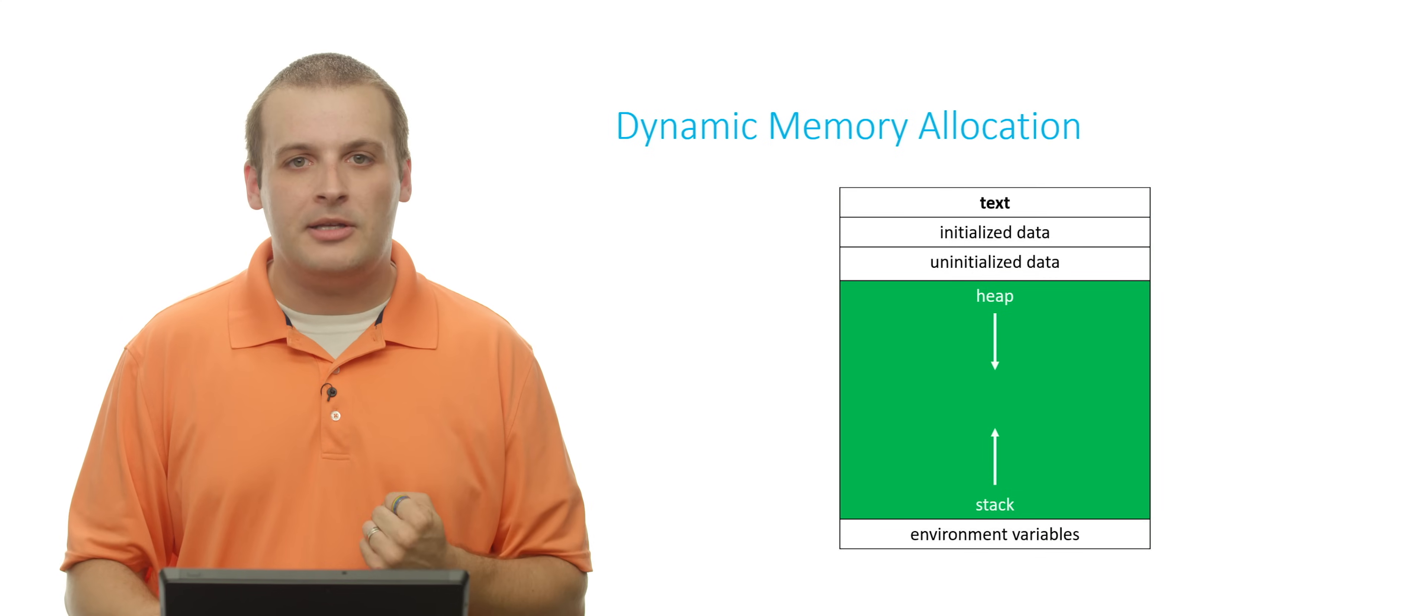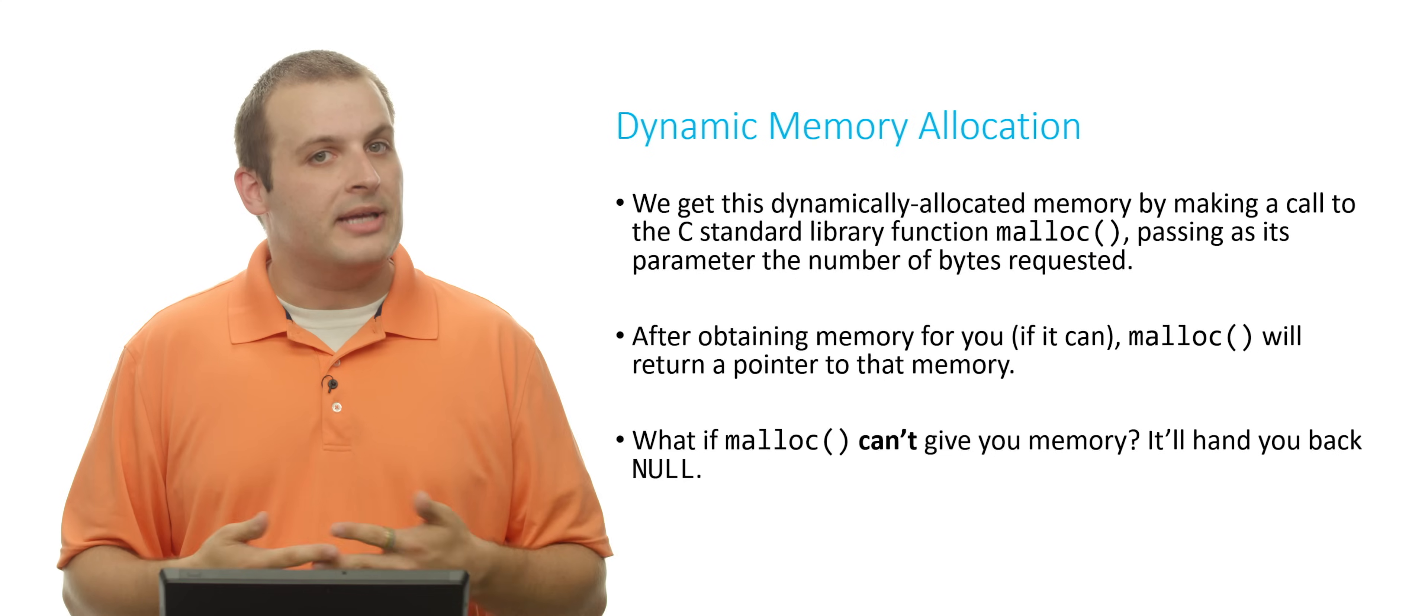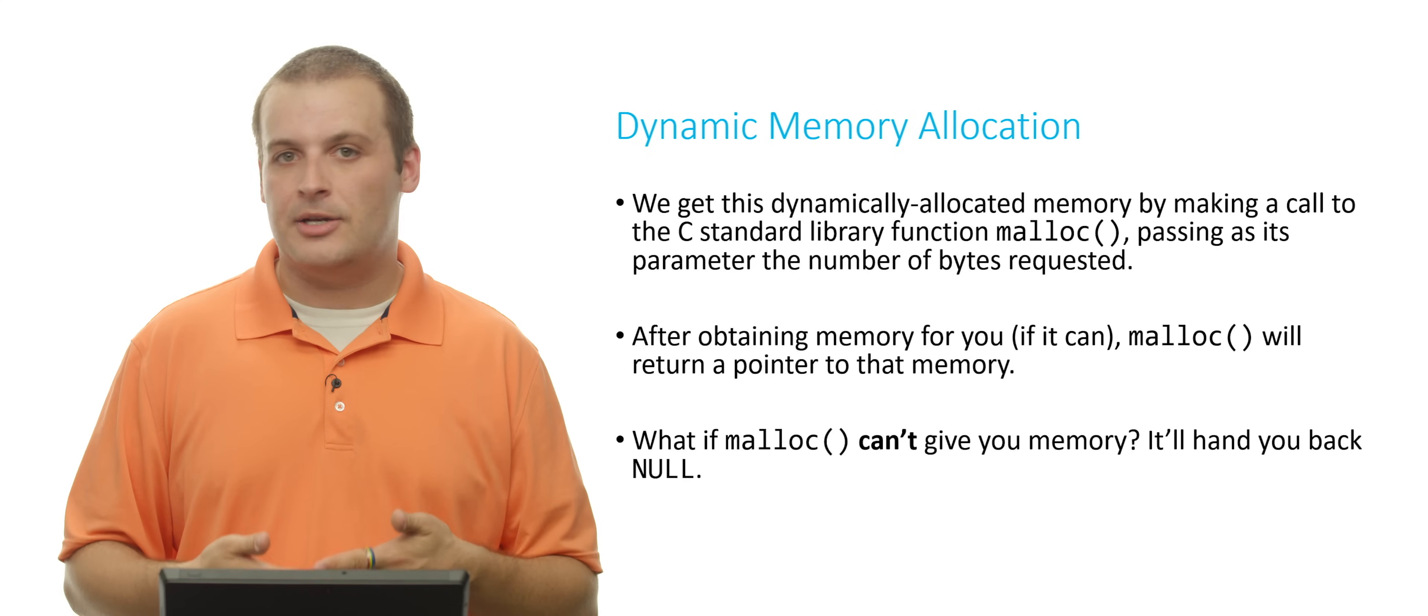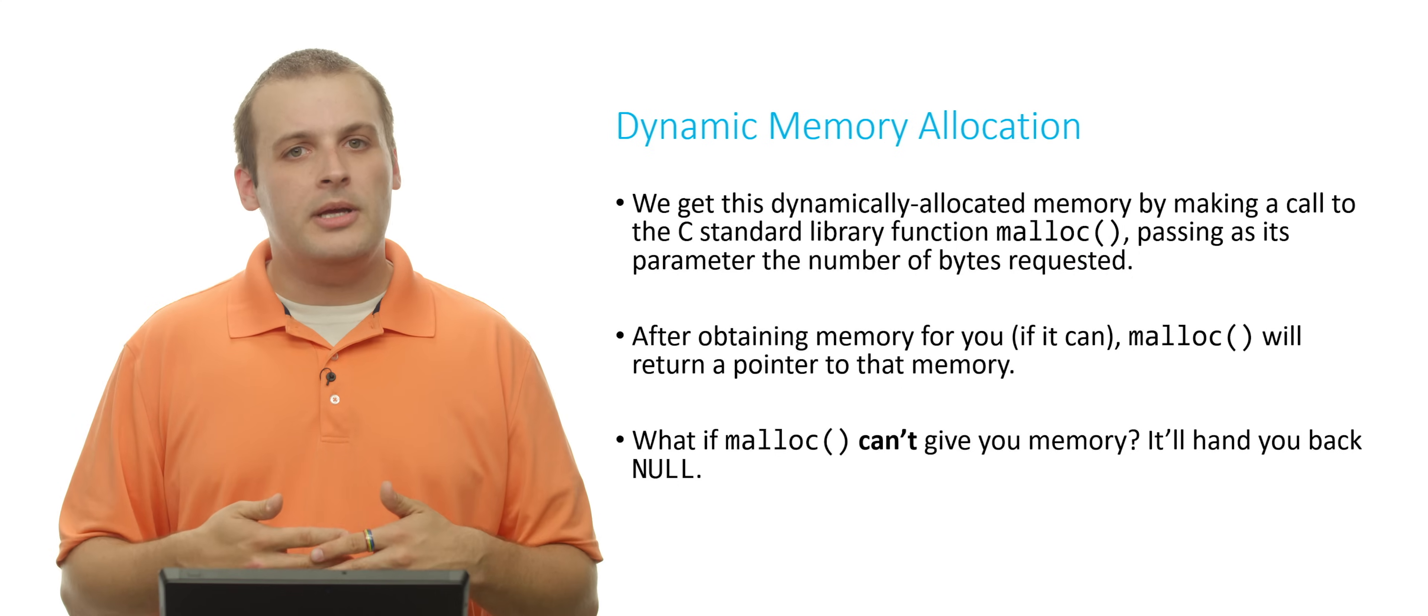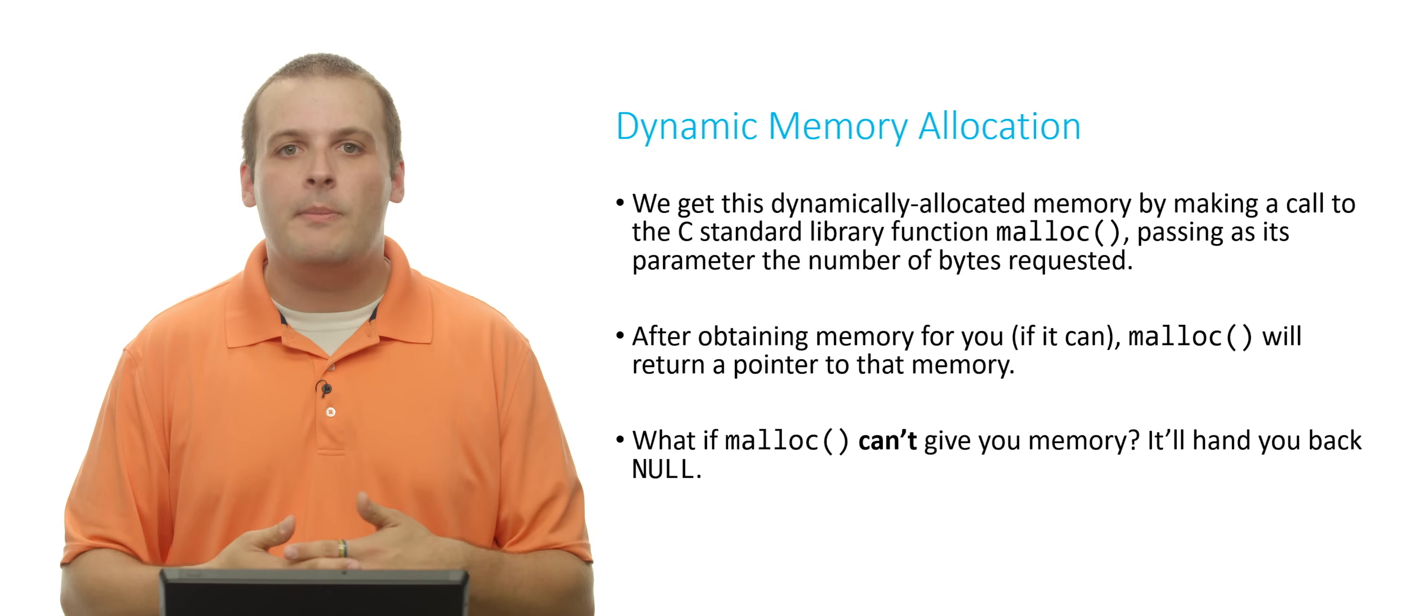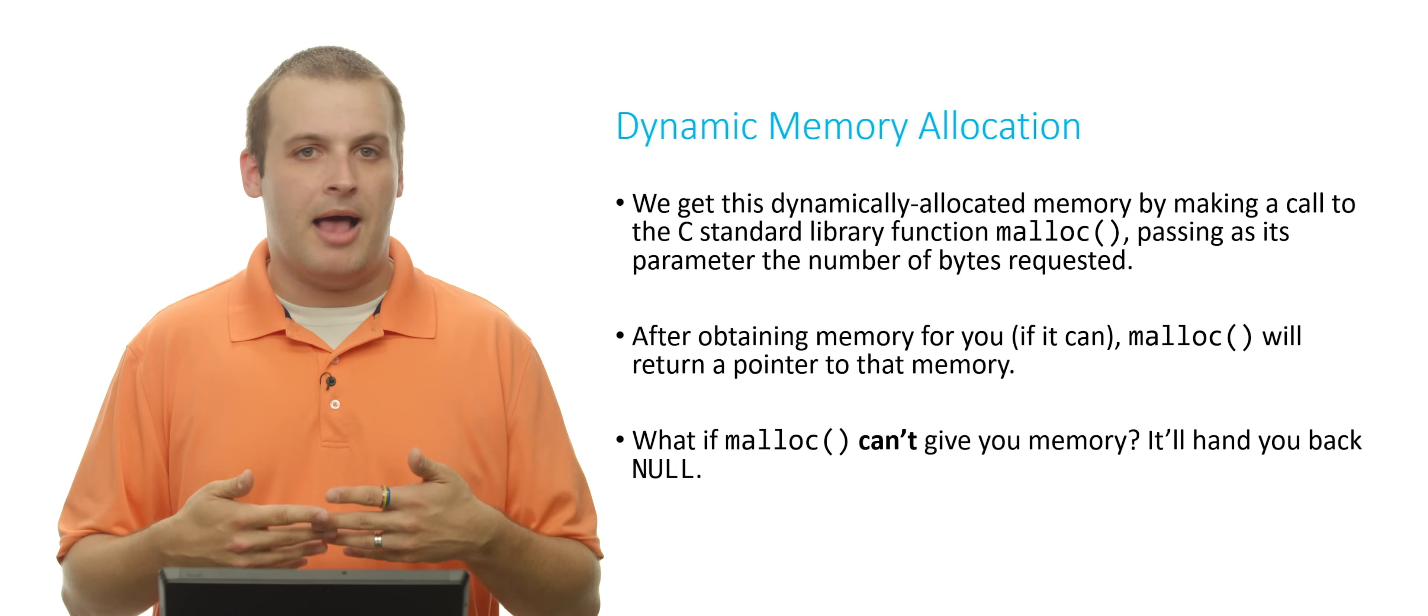How do we get at this dynamically allocated memory? How do we access memory on the heap? We need to use a new function called malloc. You can get malloc by pound including standard lib.h, S-T-D-L-I-B dot H. And the only argument that you need to pass to malloc is how many bytes of memory that you want. So if you want an integer, you say malloc four.